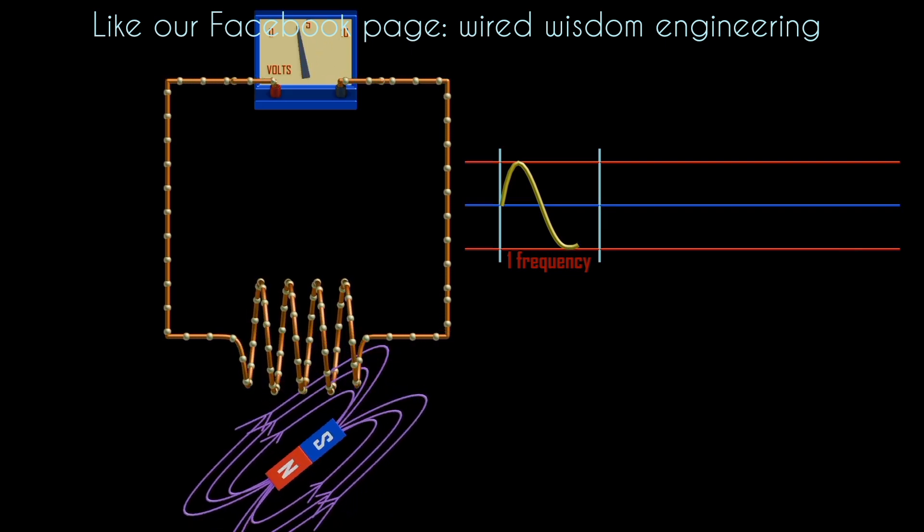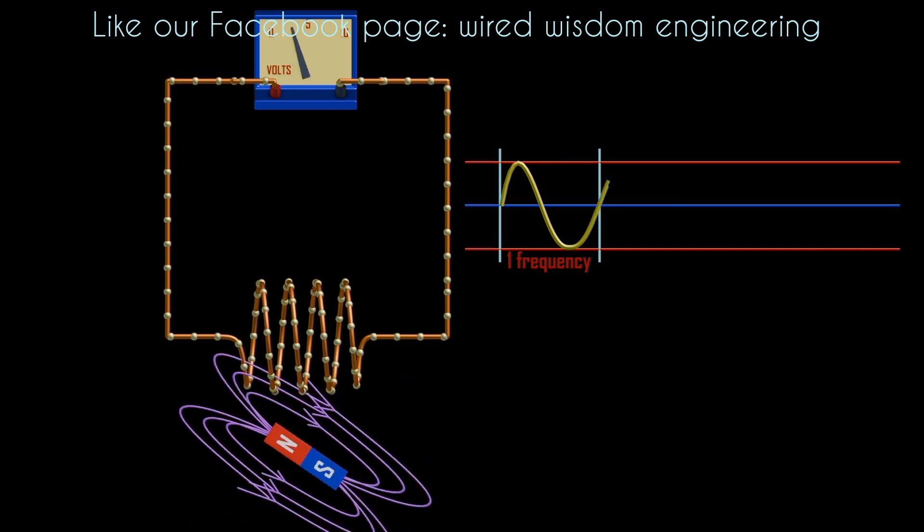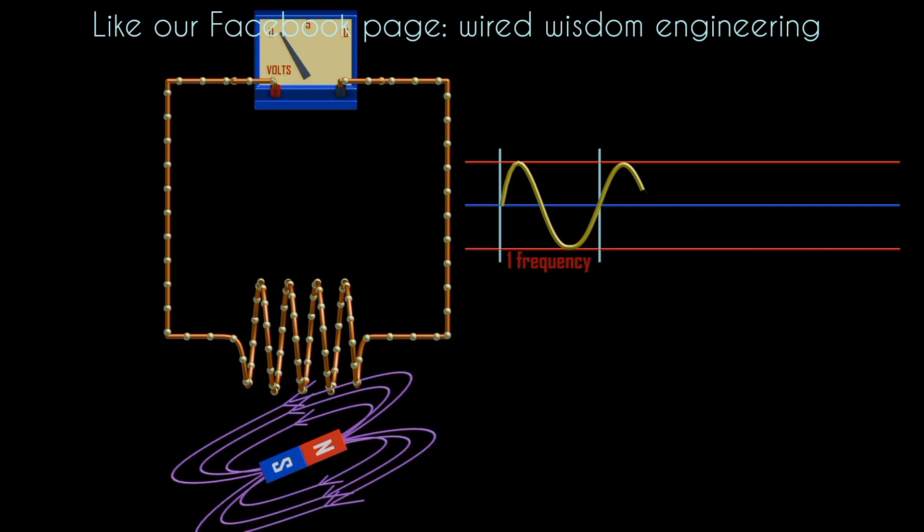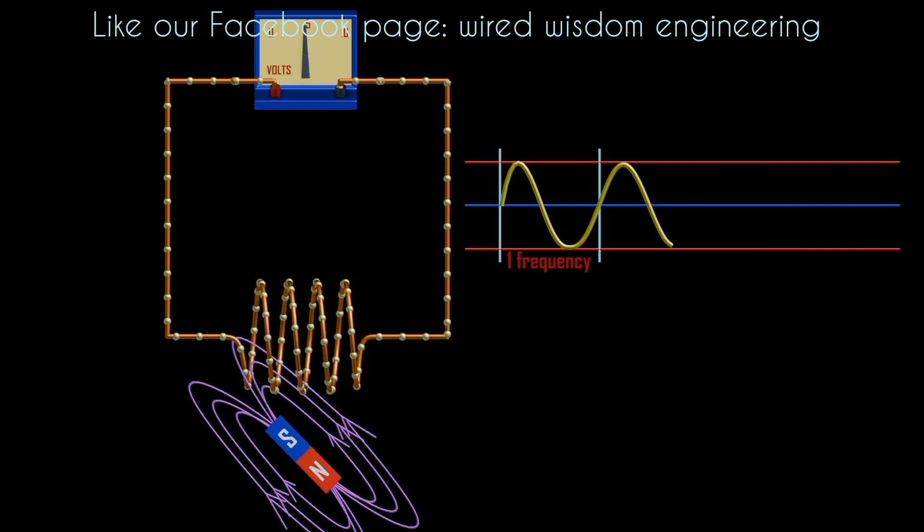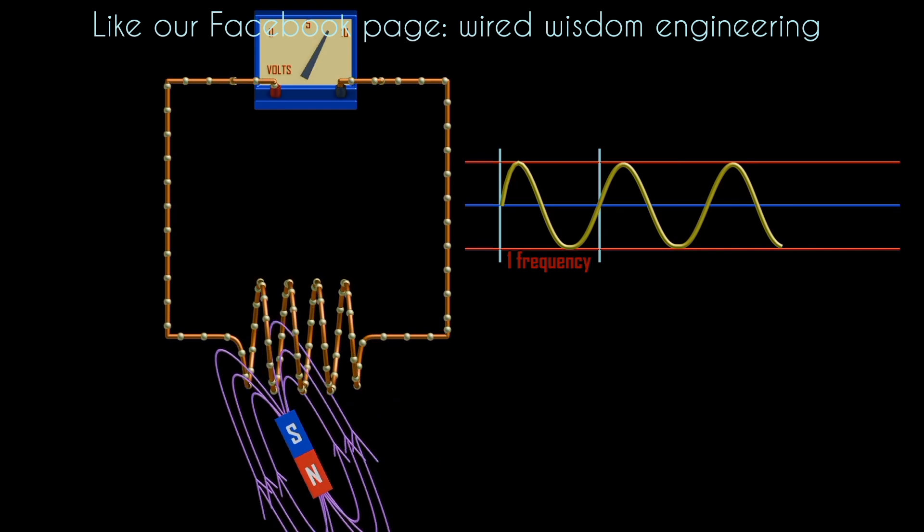Similarly, when the north pole is approaching, the current gradually increases. Then when the north pole is moving away, the current gradually decreases. This one plotted forms a sinusoidal waveform. And when both north and south pole has cut the coil, it forms one frequency.